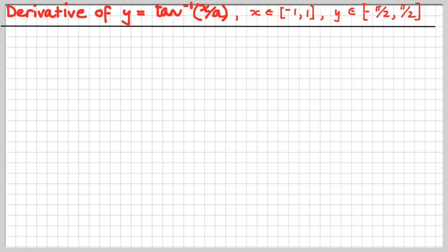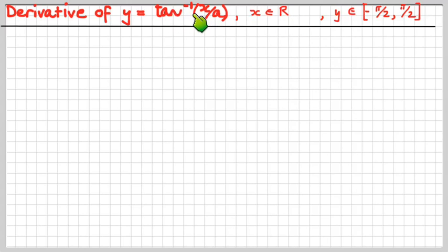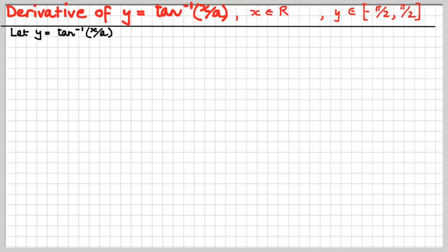More excitement — tan's the man. We've got y is the angle whose tan is x over a. There was a copy-paste error with the domain — I forgot to change it from the inverse cos version — so please forgive me. We're doing the derivative of y equals inverse tan of x over a. Y is the angle whose tan is x over a. There's the magic triangle, and there's the third side.